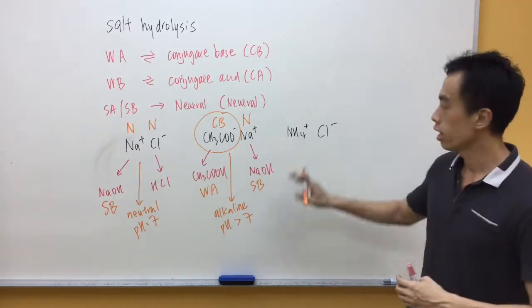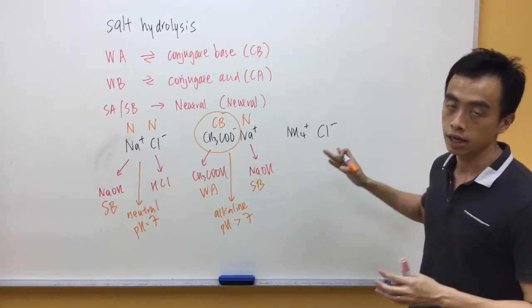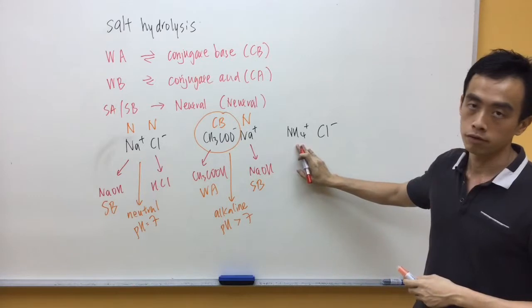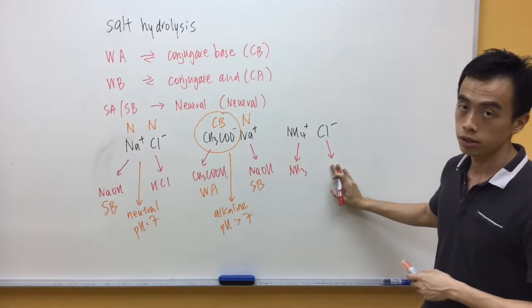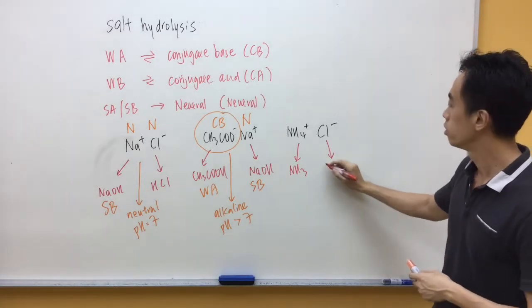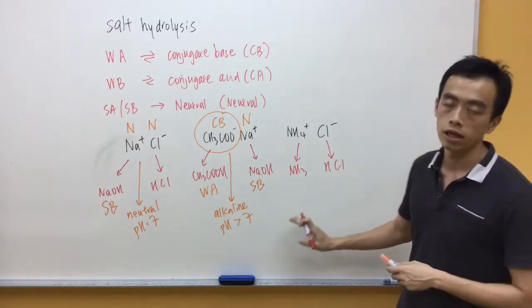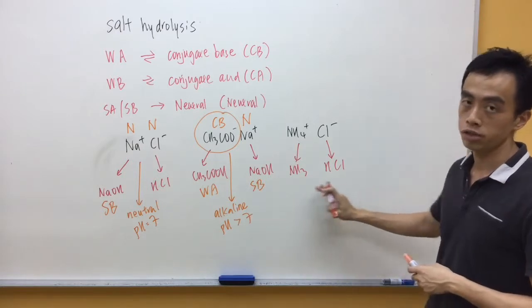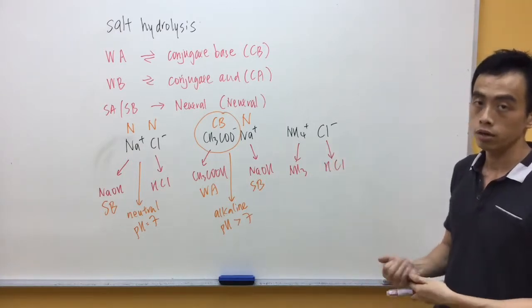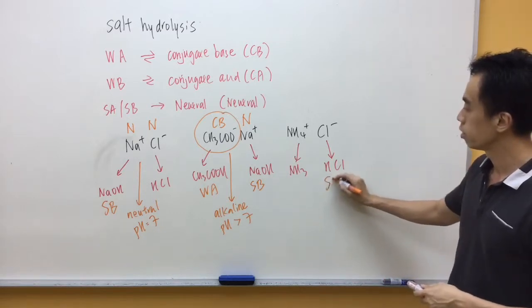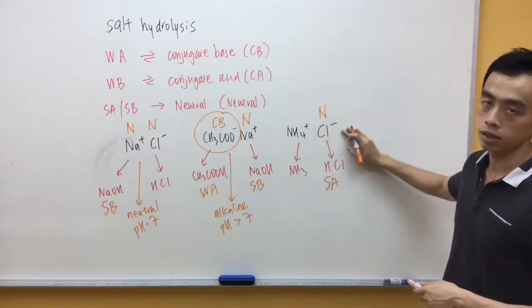Lastly, we consider NH4+ and Cl-. The idea is the same. NH4+ is formed from ammonia. Cl- we get it from HCl. We have an acid-base reaction between ammonia and HCl. We give you this particular salt. HCl is a strong acid. Counter ion form, Cl- is neutral.